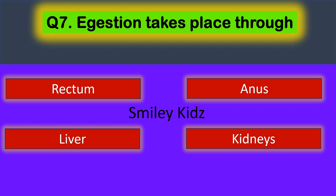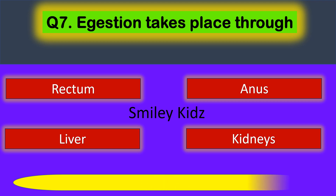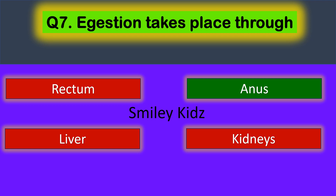Question number 7. Egestion takes place through... Your options are Rectum, Anus, Liver, and Kidneys. The correct answer is Anus. Egestion takes place through the Anus.